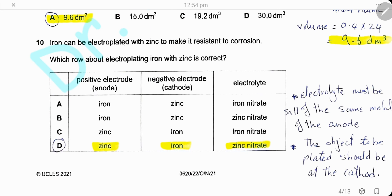Question 10. Iron can be electroplated with zinc to make it resistant to corrosion. In electroplating, the object to be electroplated is always at the cathode, so iron is at the negative electrode and zinc is at the positive electrode. The electrolyte is made from a salt of the metal at the anode, so the electrolyte is zinc nitrate, the cathode is iron, and the anode is zinc.